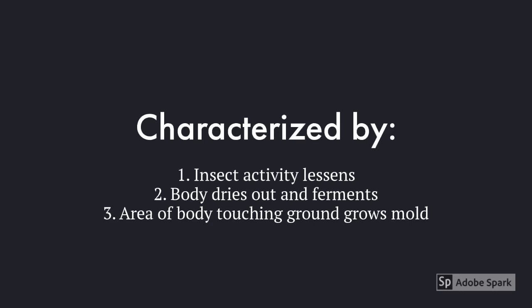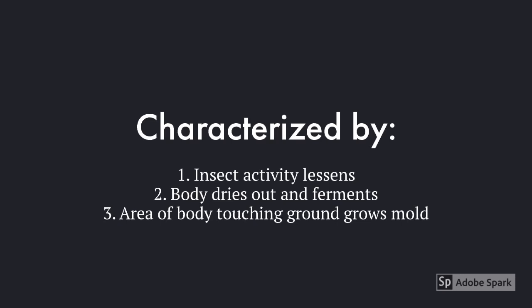During stage four, or advanced decay, we start to see a decrease in insect activity. The body starts to dry out and actually begins to ferment, and the area of the body that's touching the surface it's laying on starts to grow a layer of mold.